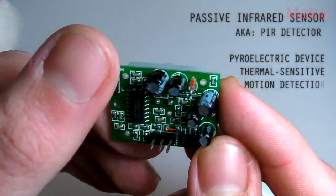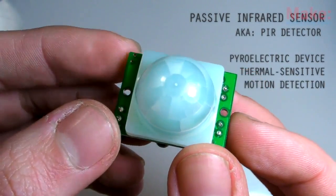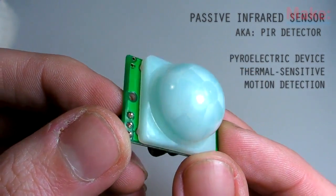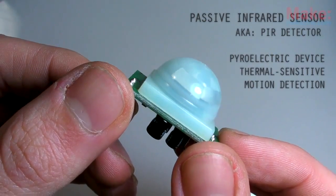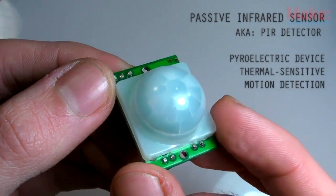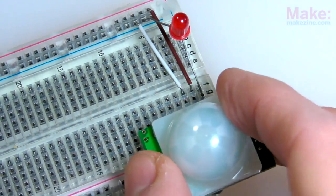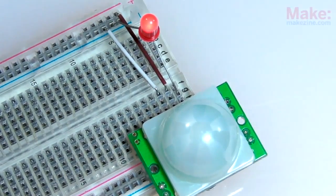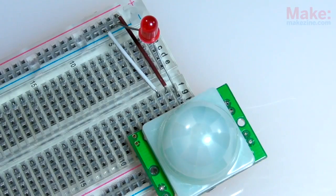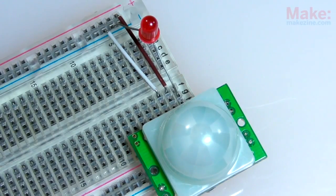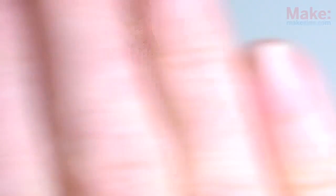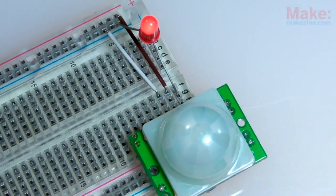This passive sensor doesn't generate any infrared on its own. Instead, it responds to abrupt changes in the amount of infrared light around it. When first powered on, it calibrates itself to the amount of IR it currently sees. When that amount changes, it sends an electrical signal out from one of its terminal pins. Connecting one of these to a microcontroller board is an easy way to add motion sensing capabilities to a project.